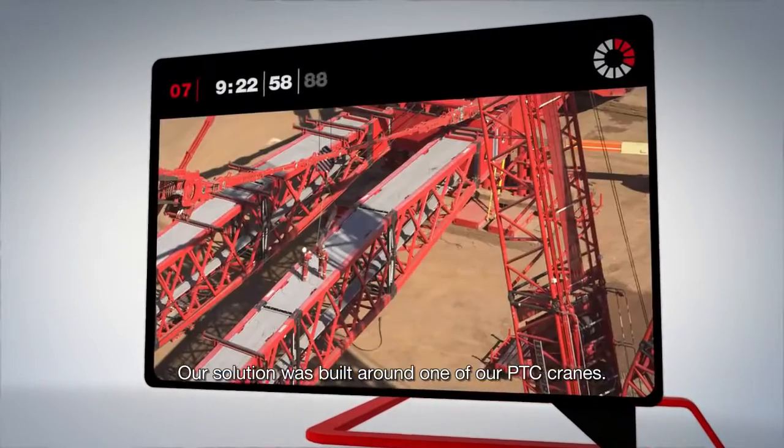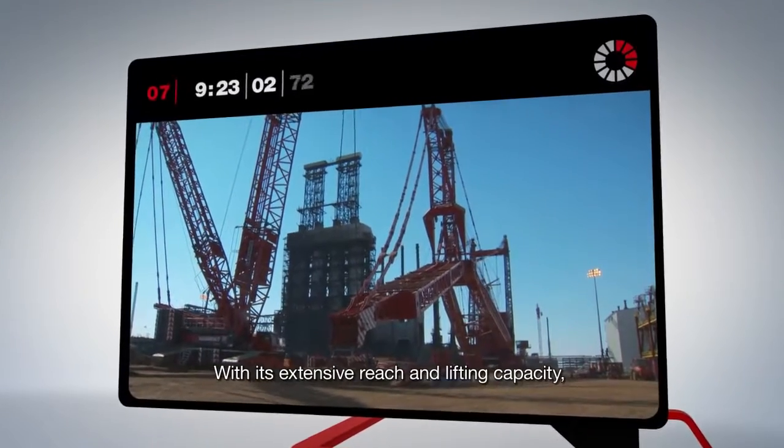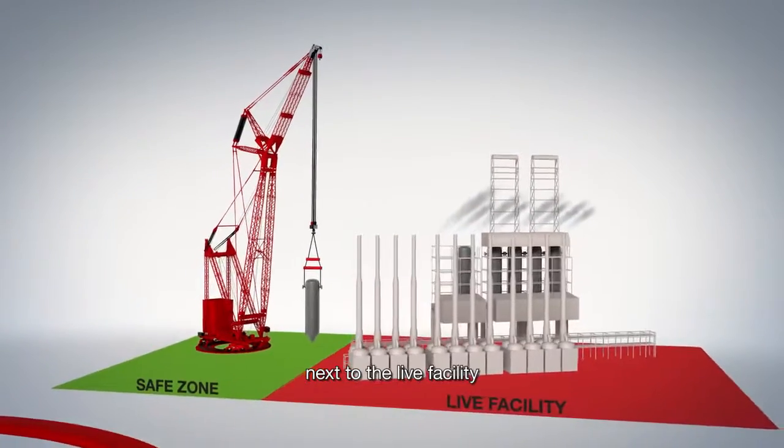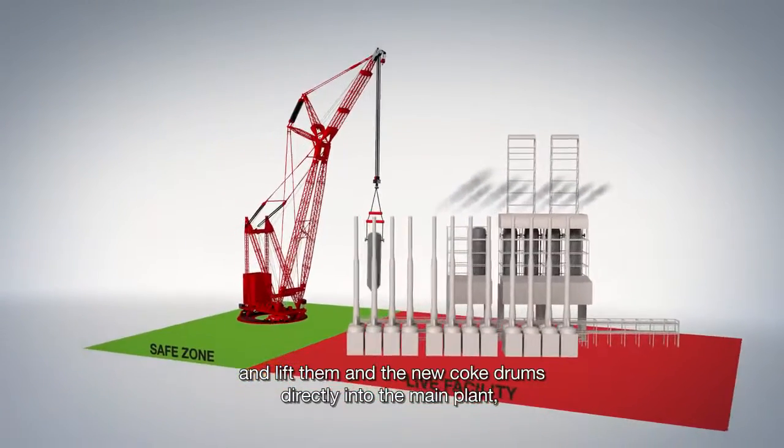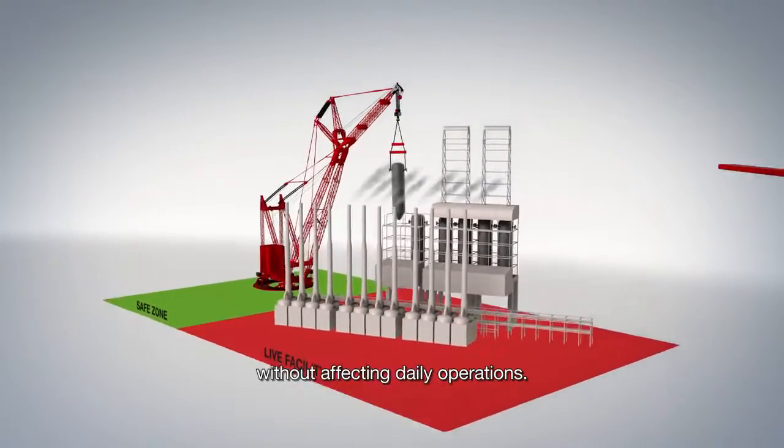Our solution was built around one of our PTC cranes. With its extensive reach and lifting capacity, it was possible to construct large modules next to the live facility and lift them and the new coke drums directly into the main plant without affecting daily operations.